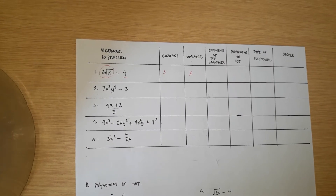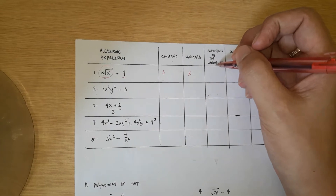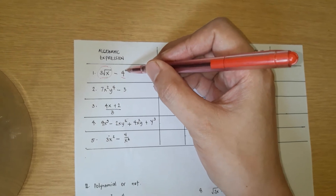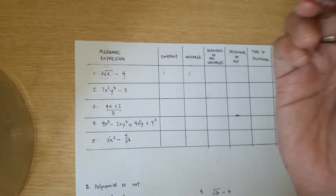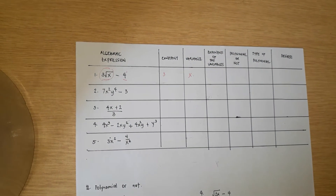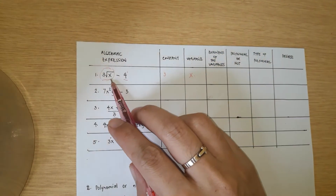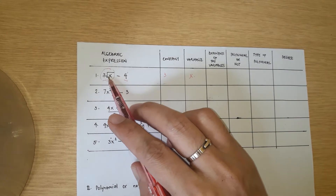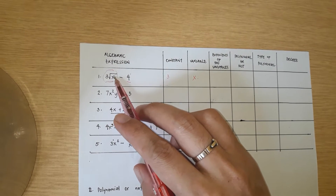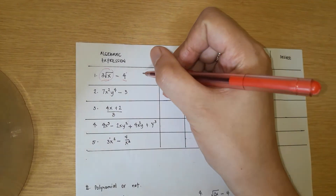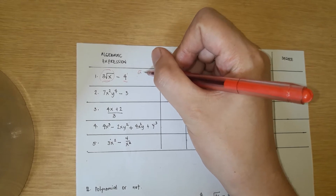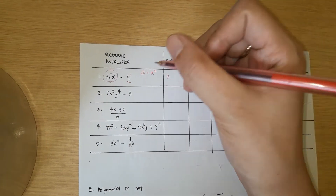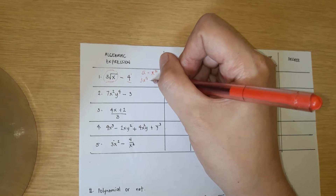For example, the number 4 — when no exponent is written, the exponent is 1, but you don't need to write it. For √x, the exponent is not 1; it is 1/2, because √x can be written as x to the power of 1/2. So the full expression is 3x^(1/2) minus 4.